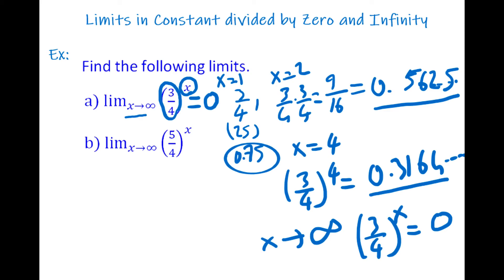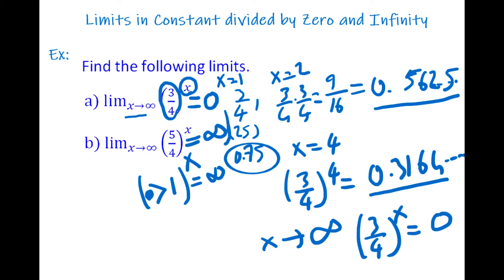In part b: the limit of (5/4) to the power of x as x goes to infinity. Here the base 5/4 is greater than 1. When a number greater than 1 is raised to a power that goes to infinity, the result is infinity. So the limit in part b is positive infinity.